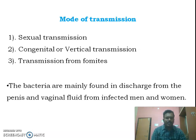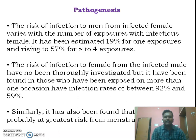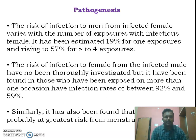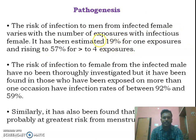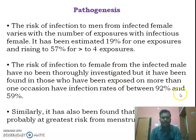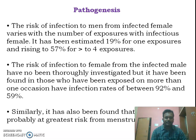This bacteria are mainly found in the discharge from the penis and vaginal fluid from infected men and women. Regarding transmission rates, female-to-male transmission depends on the number of exposures. Upon one intercourse the transmission rate is 19%, and if more than four exposures, the rate is 57%. For male-to-female transmission, there is no definitive evidence and the rate ranges from 59% to 92%. It has also been found that males are at greater risk from menstruating females suffering from concurrent infections.